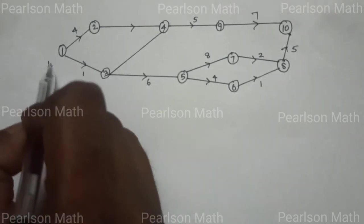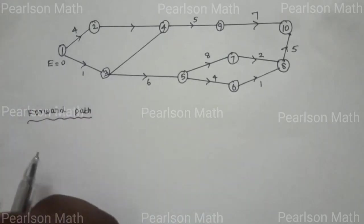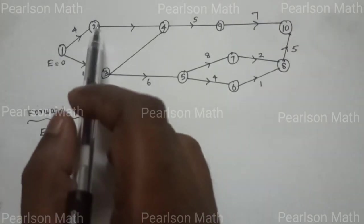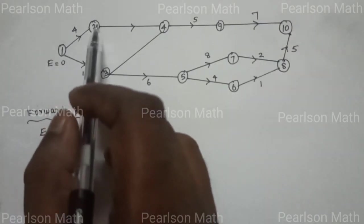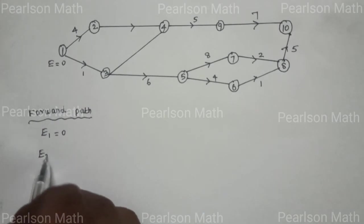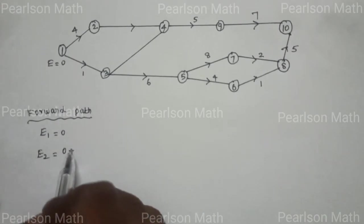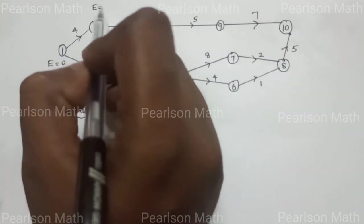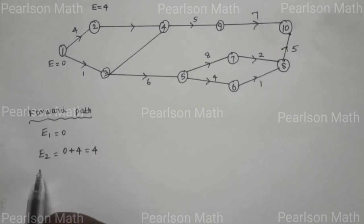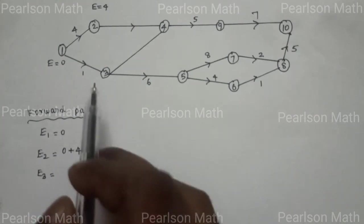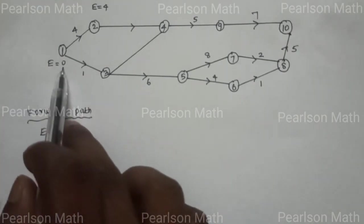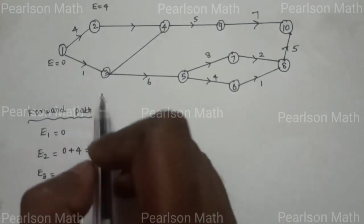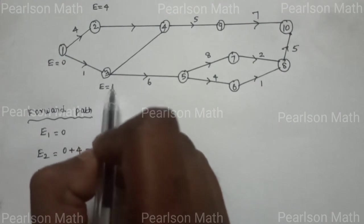Early start time: E1 is equal to 0, that is the starting node. E2: path 1 to 2 gives 0 plus 4 equal to 4. E3: path 1 to 3 gives 0 plus 1 equal to 1. So E2 is equal to 4 and E3 is equal to 1.